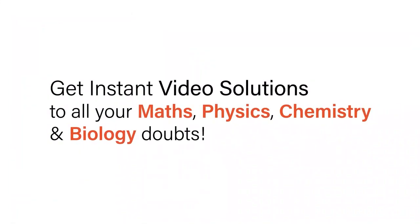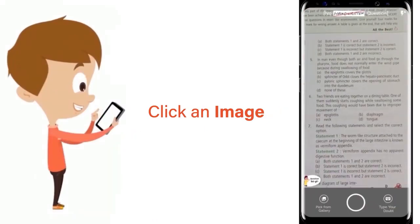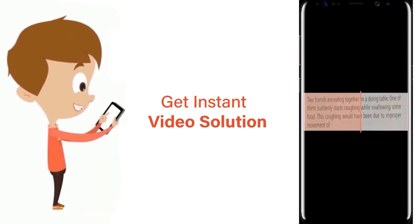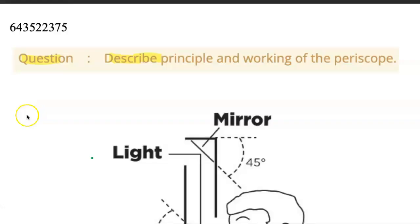With Doubtnet, get instant video solutions to all your maths, physics, chemistry, and biology doubts. Just click the image of the question, crop the question, and get instant video solution. Download Doubtnet app today. Question: Describe principle and working of the periscope.